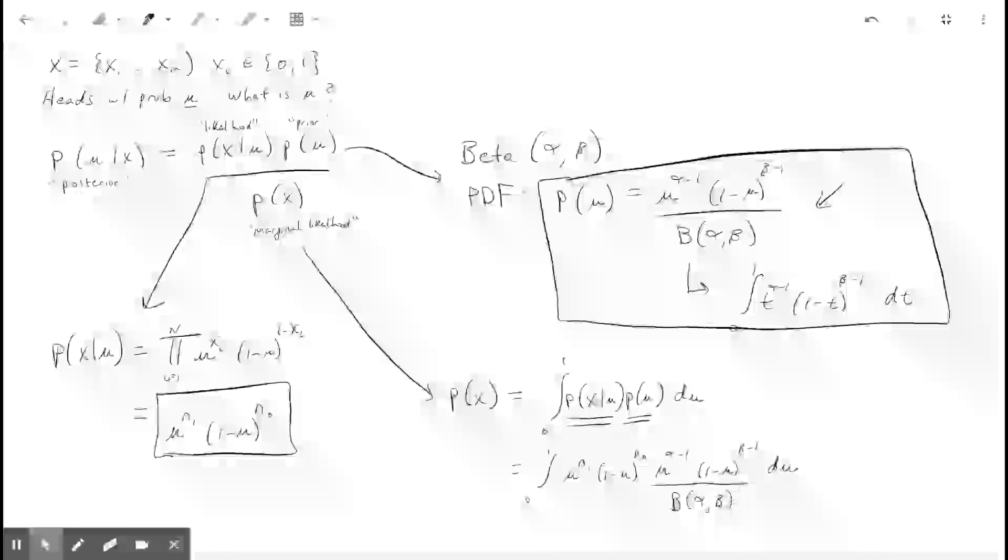So now we have, we've written formulas for each term. We've written the beta prior, we've written the marginal likelihood, and we've written the likelihood.